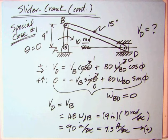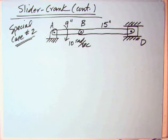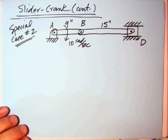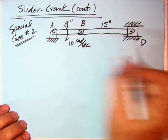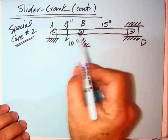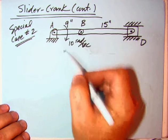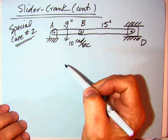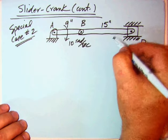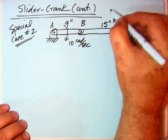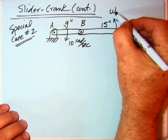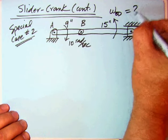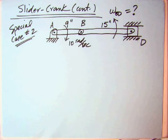Special case number two. I'm going to use the same dimensions. I'm going to lay out the slider crank to where AB is horizontal, nine inches and 15 inches, rotating clockwise at ten radians per second. Based on our assumptions, omega BD is this way. The question is, what is its magnitude and direction?